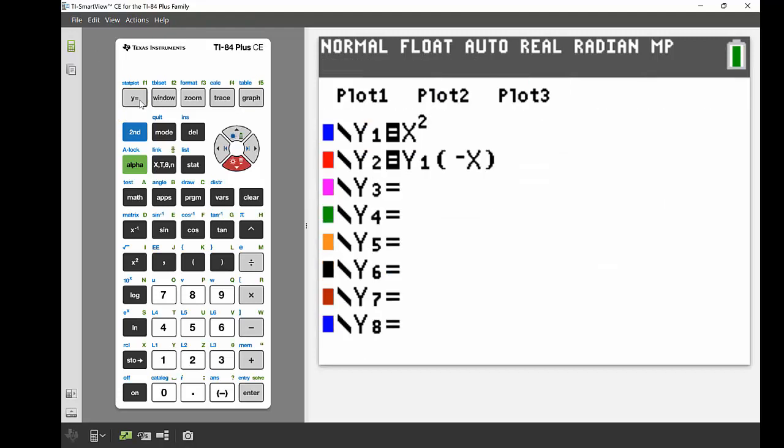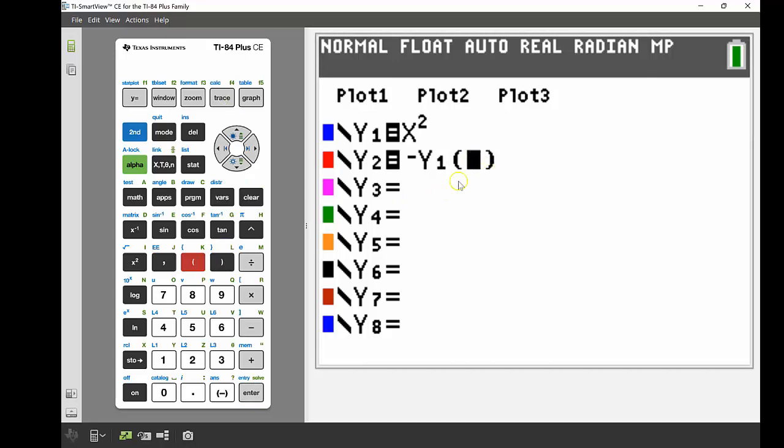Okay, back into my y equals. And this time instead of looking at what happens when we put in -x into y1, I'm going to see what happens when we make the whole of y1 negative. So in this case we're going to have negative, again alpha F4 to bring up y1, and we're just going to have our standard positive x put in there.